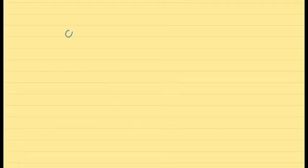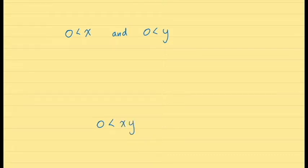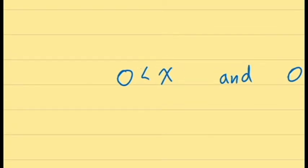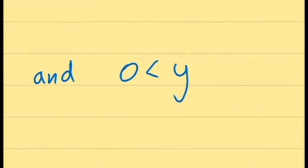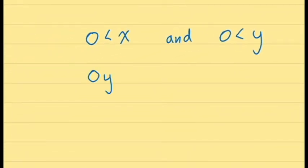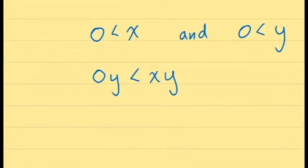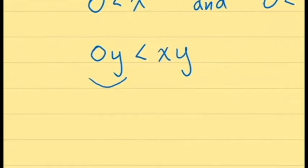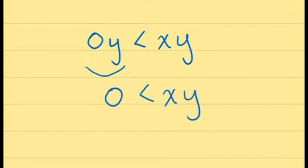Our assumption is that X is greater than 0 and Y is greater than 0, which means we can use these two inequalities in our proof. We would like to draw a conclusion about the product XY, so it makes sense to start with the inequality X is greater than 0 and multiply both sides by Y to introduce the product XY. Since Y is greater than 0, multiplication by Y will preserve the inequality — this is because of axiom O4. This gives us 0 times Y on the left-hand side and X times Y on the right-hand side. Proposition 1 tells us that 0 times Y is 0, and so we very quickly get the conclusion we're looking for: 0 is less than XY.